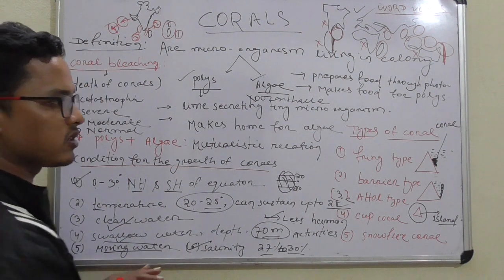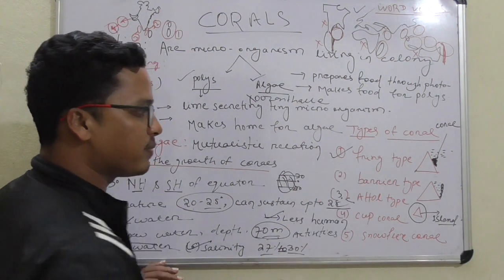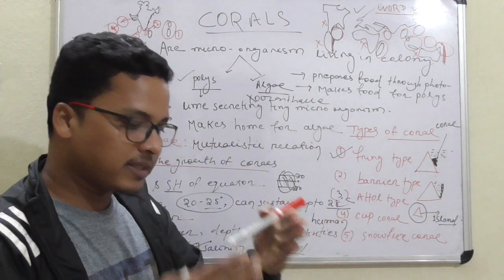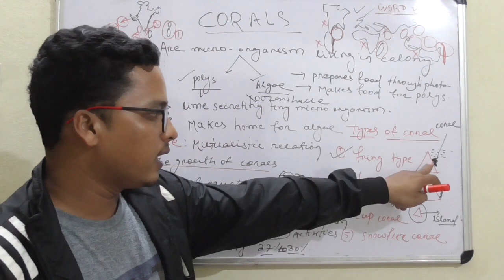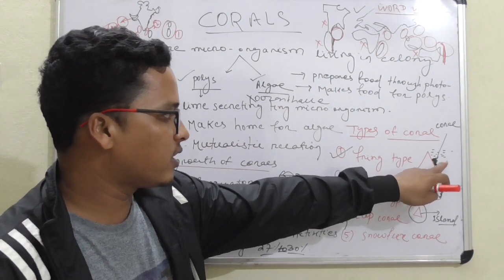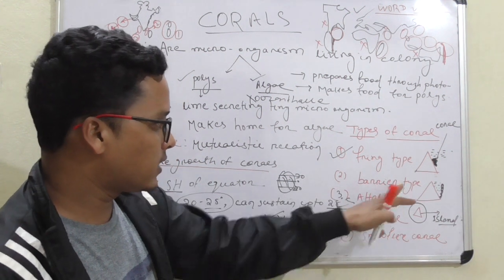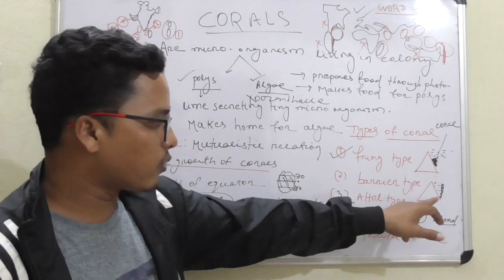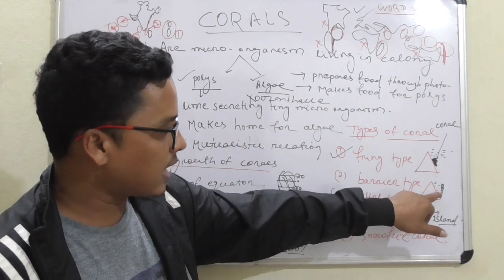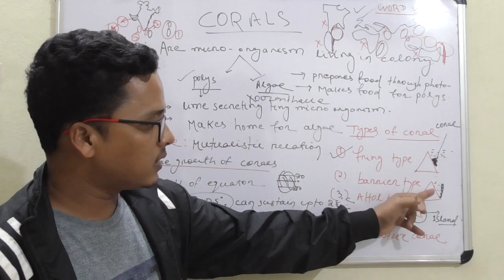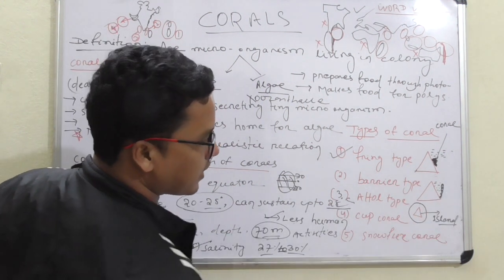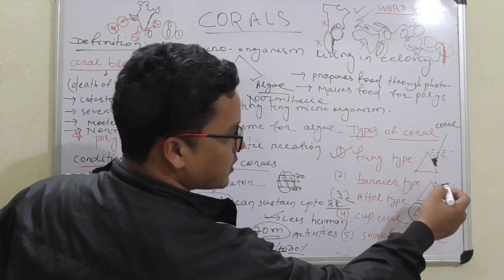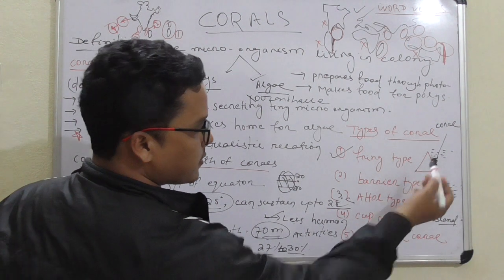Now the types of corals. First is fringing type: fringing corals are attached to the land or island. Second is barrier type: barrier corals are away from the coast. Looking at the diagram, this is the water and the coral is away from the coast — hence it is the barrier type, acting as a barrier protecting the coast.